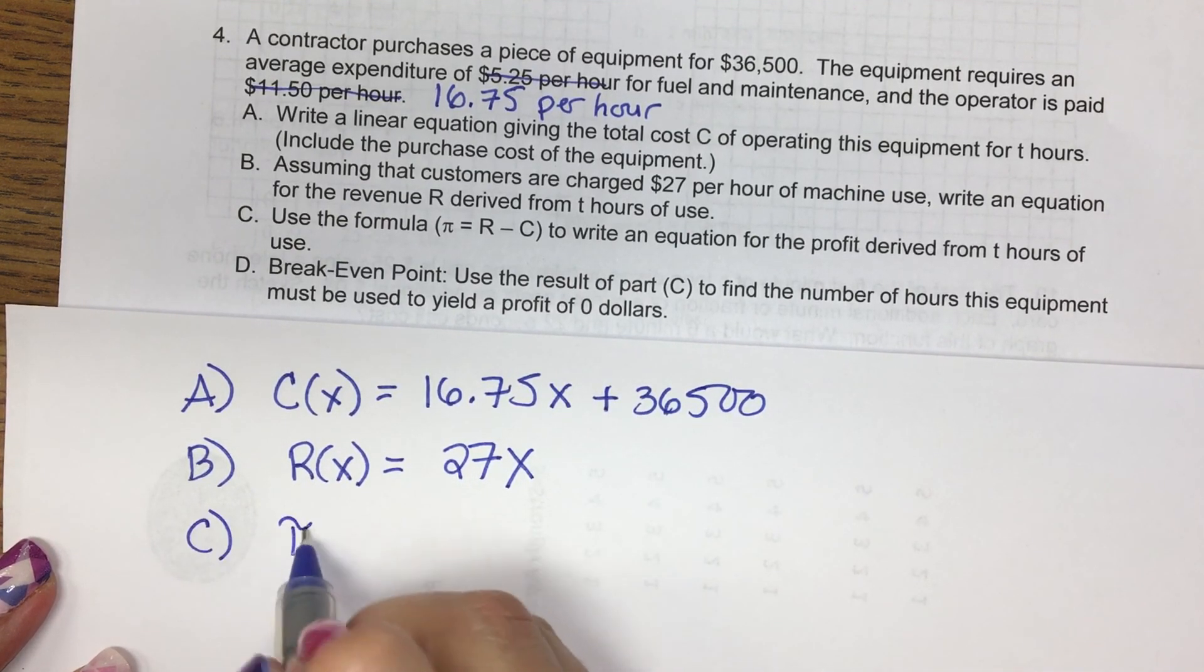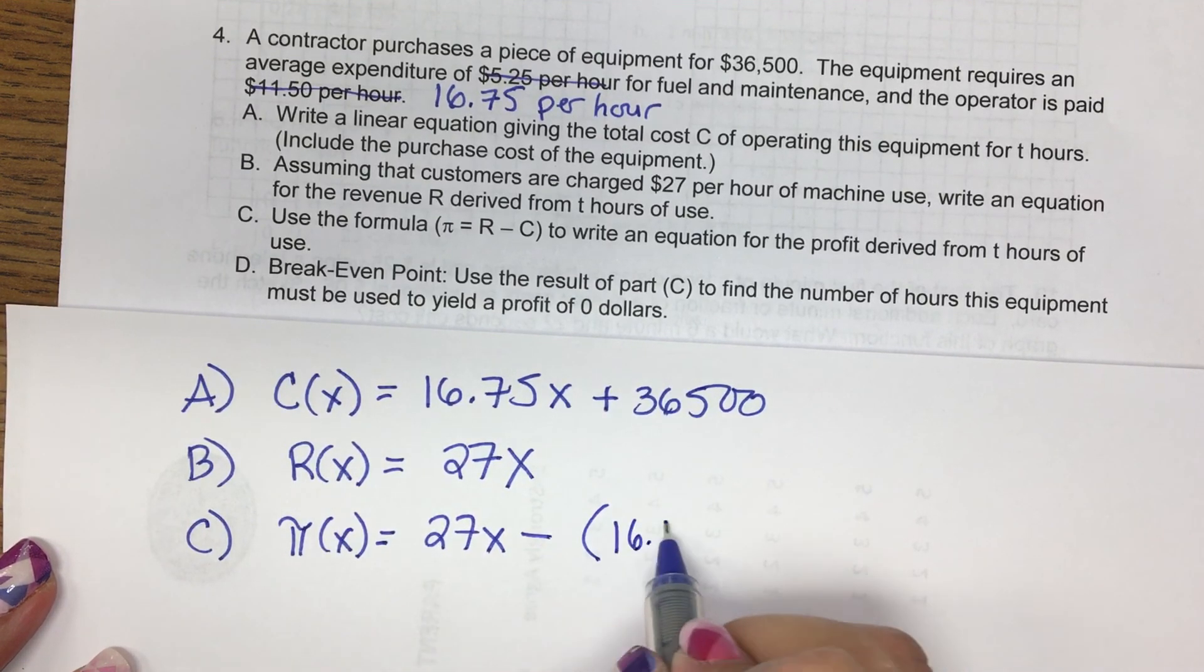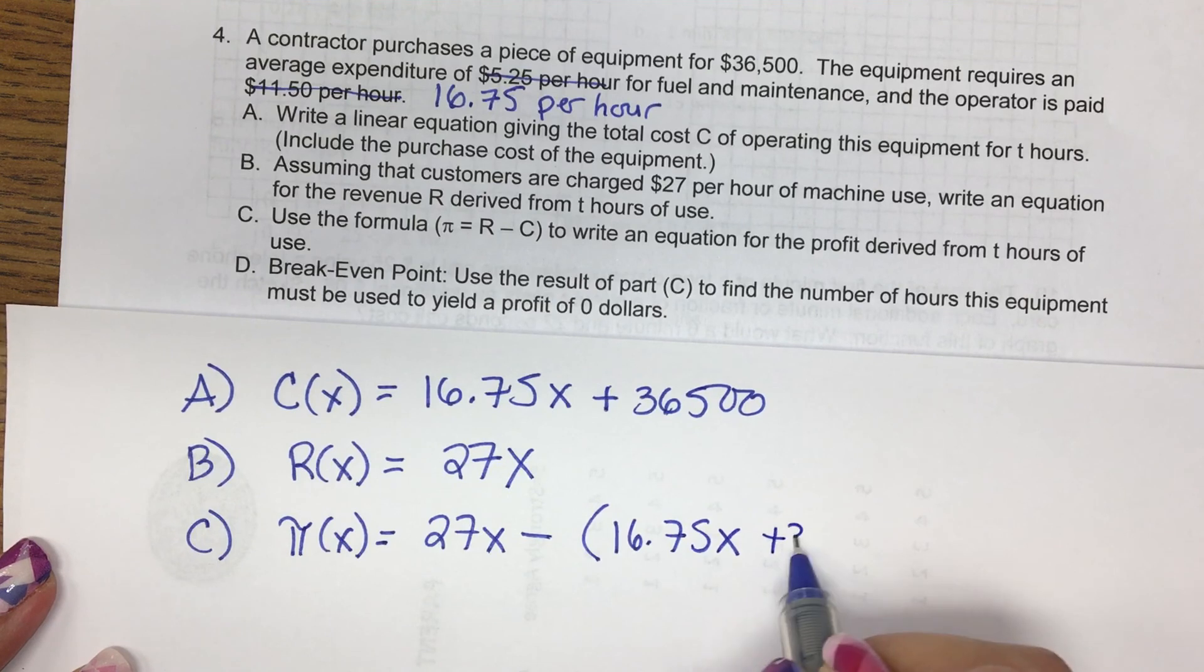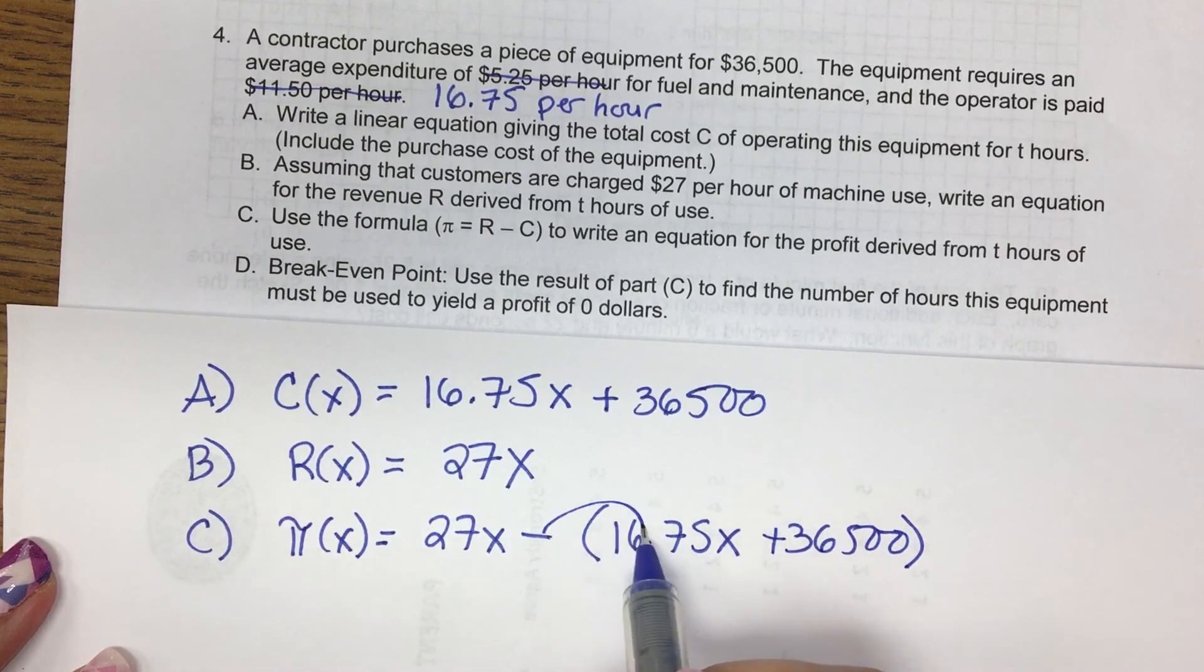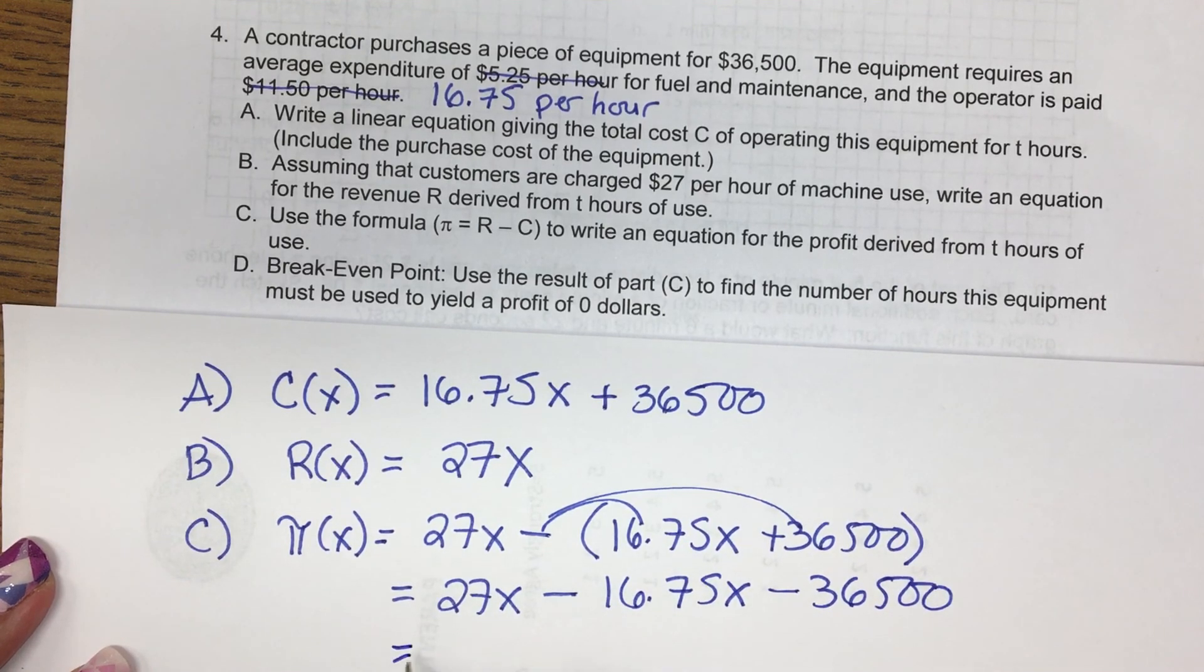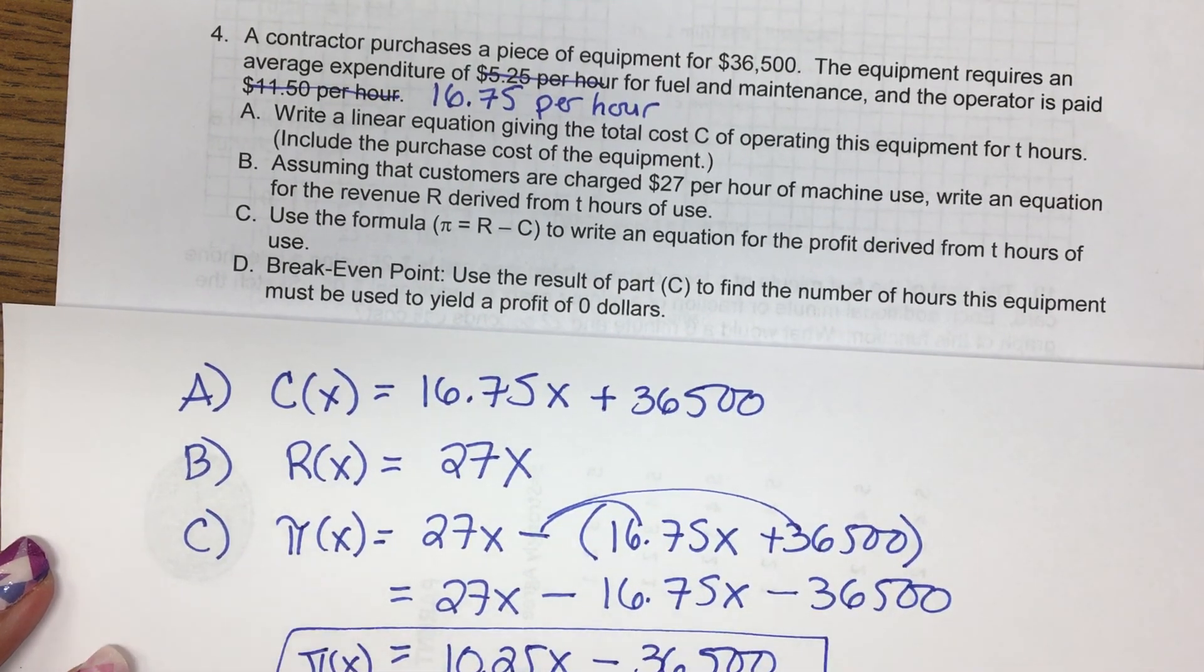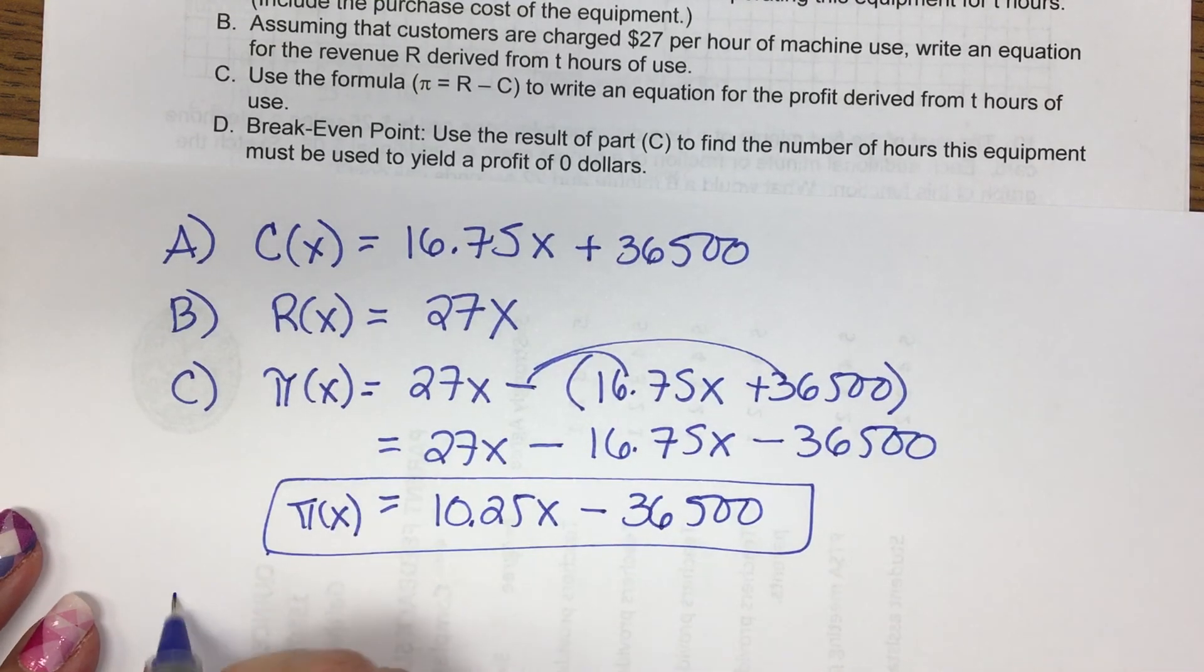Part C is profit, which is revenue minus cost. And you have to be careful when simplifying because this negative gets distributed. So then we're going to do 27 minus $16.75. So that is $10.25x minus $36,500 for profit. Oh, you can't see that, sorry.